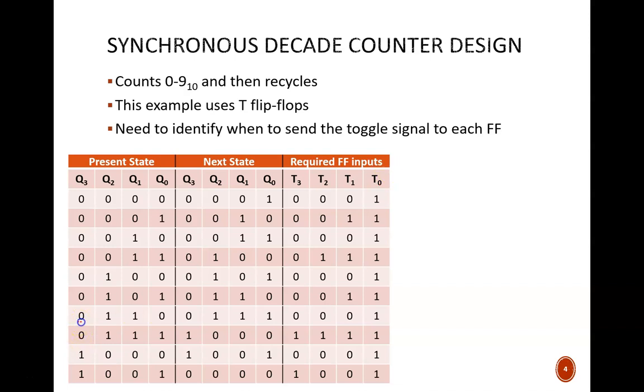For instance, from here to here q3 doesn't change, so t3 equals 0. Then from here to here q3 does toggle, so t3 equals 1.